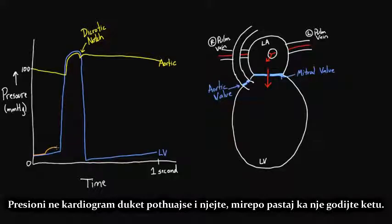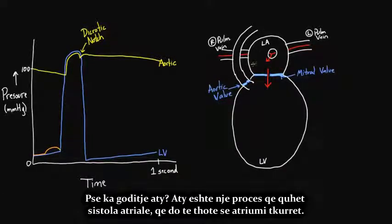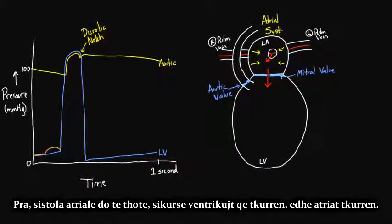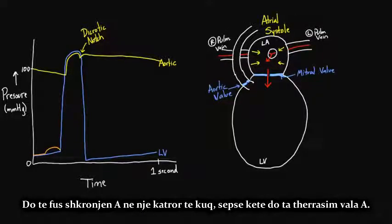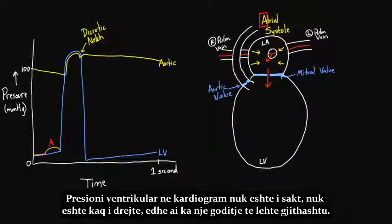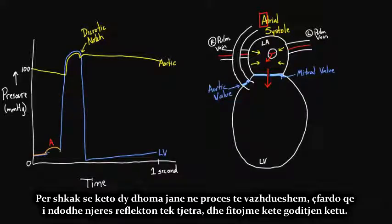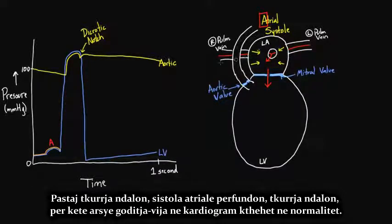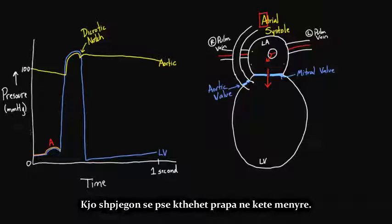But then there's a bump. Why would there be a bump? Well, there is a process called atrial systole — meaning the atrium actually contracts. Just like the ventricle likes to contract, the atria can also contract. We call this the A wave. The pressure tracing for the ventricle also has a little bump because the two chambers are continuous — whatever happens in one is reflected in the other. Then the contraction stops, atrial systole is over, and the bump comes back down.